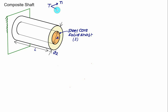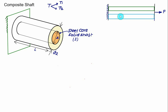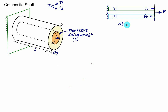Whatever torque t is applied, it is distributed into t1 and t2, so t1 plus t2 equals t. This type of problem is similar to what we have done in the case of axial loading, where we had bar 1 and bar 2 in parallel on a rigid plate with an external force f applied, and one end is fixed.